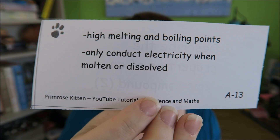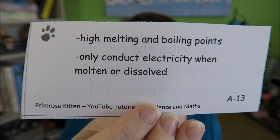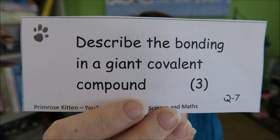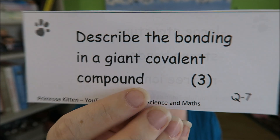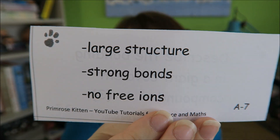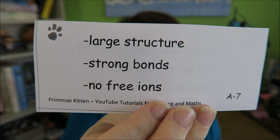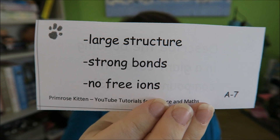Describe the properties of an ionic compound. They have high melting and boiling points, and they only conduct electricity when they are molten or dissolved — not when they are solid, because when they are solid, the ions are not free to move around. Describe the bonding in a giant covalent compound. It has a large structure, strong bonds, and no free ions — which means it is not going to conduct electricity.